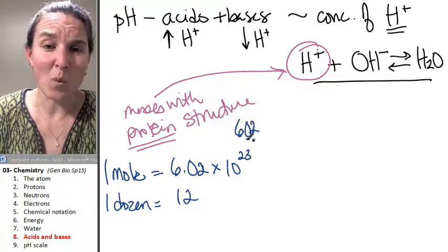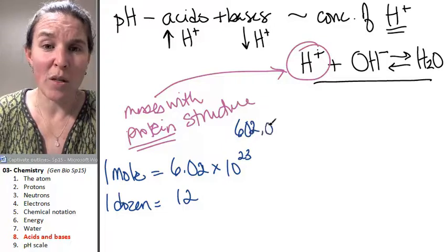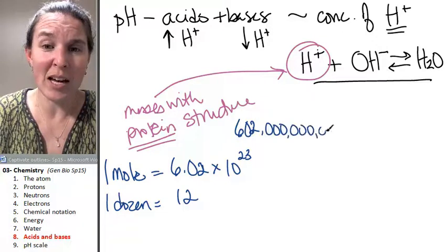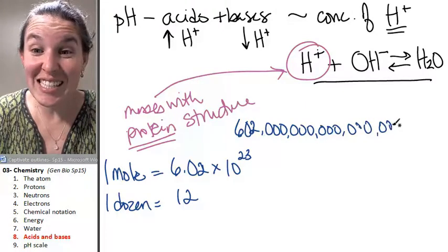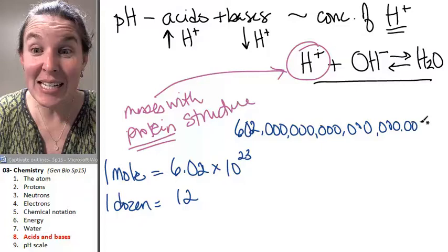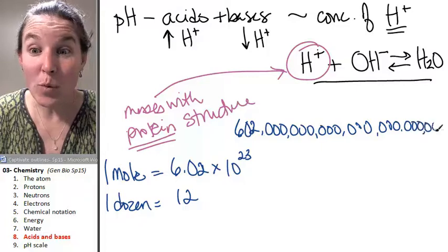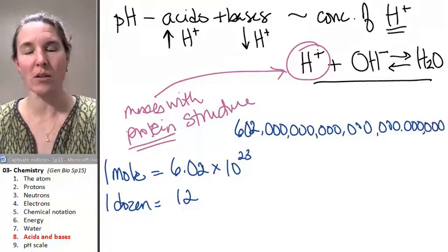602, that's 1, 2, 3, 4, 5, 6, 7, 8, 9, 10, 11, 12, 13, 14, 15, 16, 17, 18, 19, 20, 21, 22, 23 zeros. What?